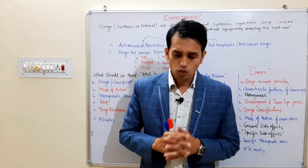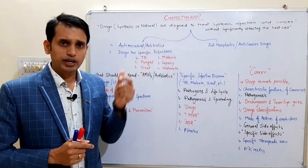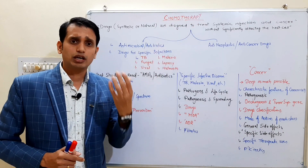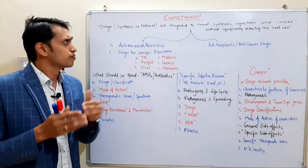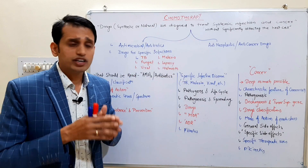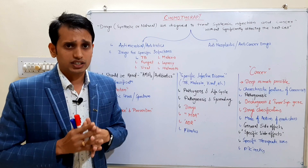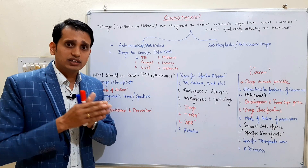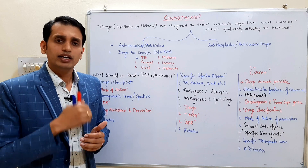So, what is chemotherapy? The term 'chemotherapy' is made of two words: 'chemo' means chemical, and 'therapy' means treatment — so, treatment by using chemicals. Drugs, whether synthetic or natural, that are designed to treat systemic infections and cancers are known as chemotherapy drugs.